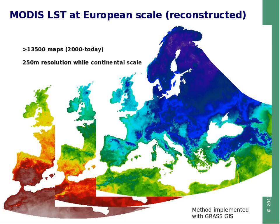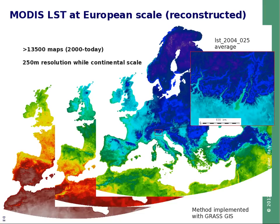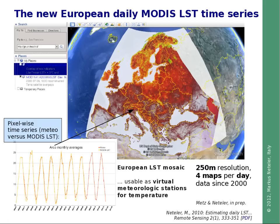Here we see one map out of almost 14,000 maps we have nearly completed so far. These are from two different dates, and zooming in reveals the 250-meter resolution delivering high detail. These land surface temperature maps form a time series of more than 10 years. Extracting all temperature values from a single pixel yields a time series, so each pixel can be considered a virtual meteorological station for near-surface temperature data. Note that a single map from these almost 14,000 maps has 415 million pixels.